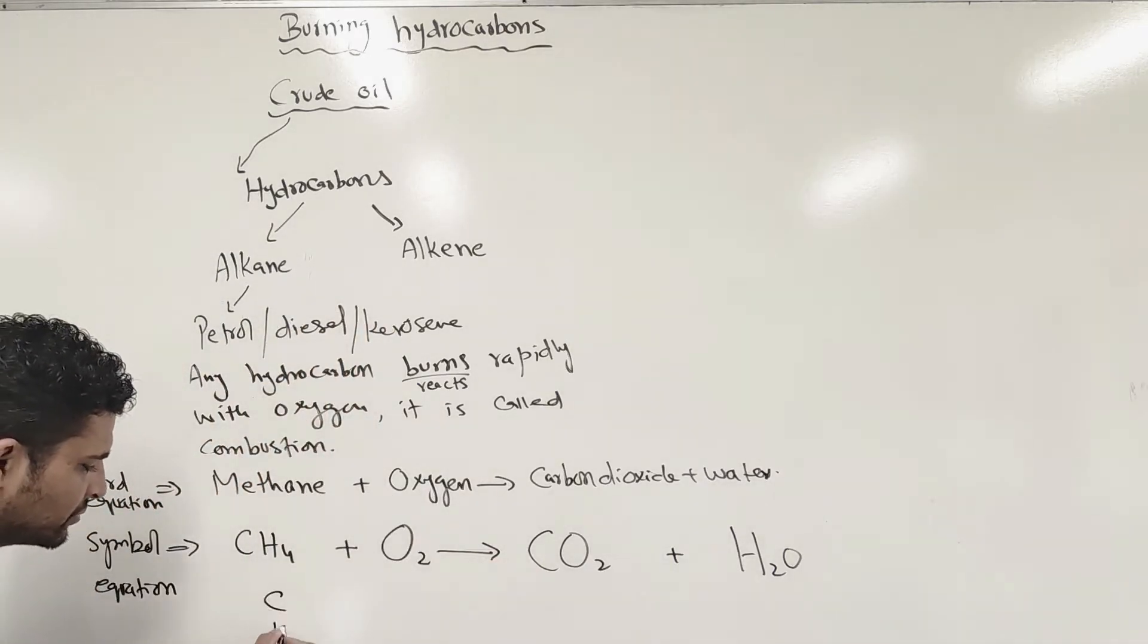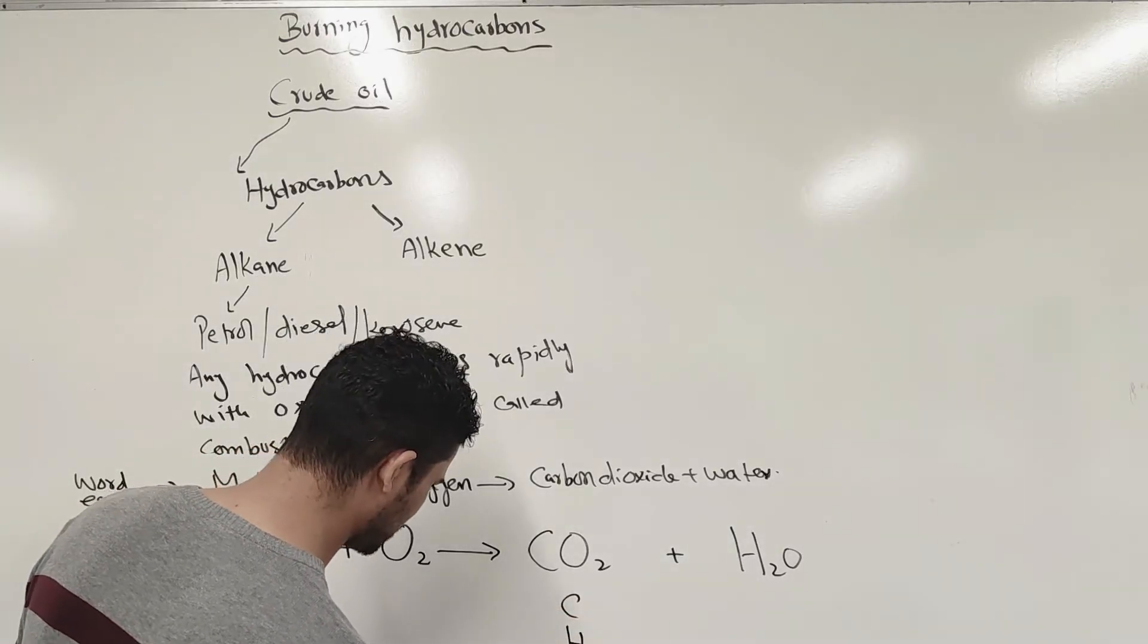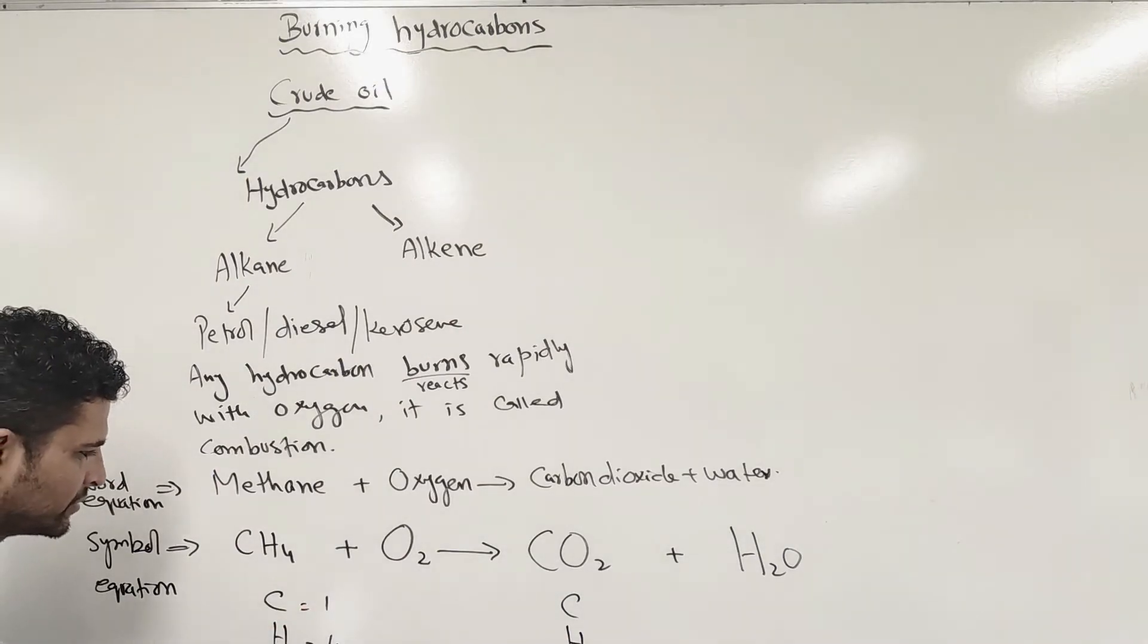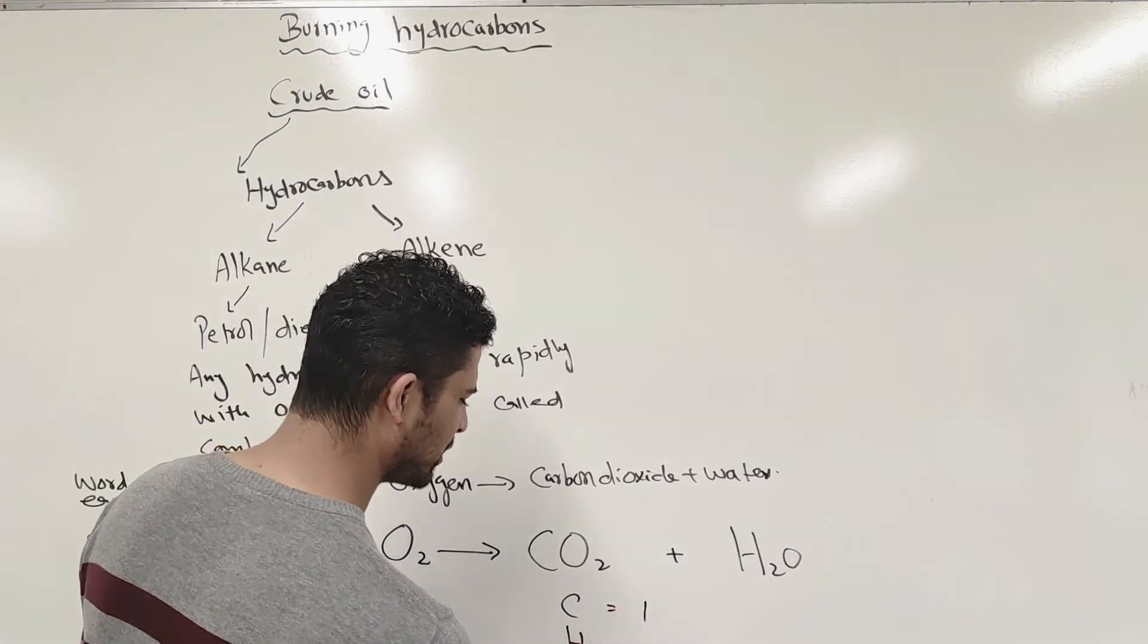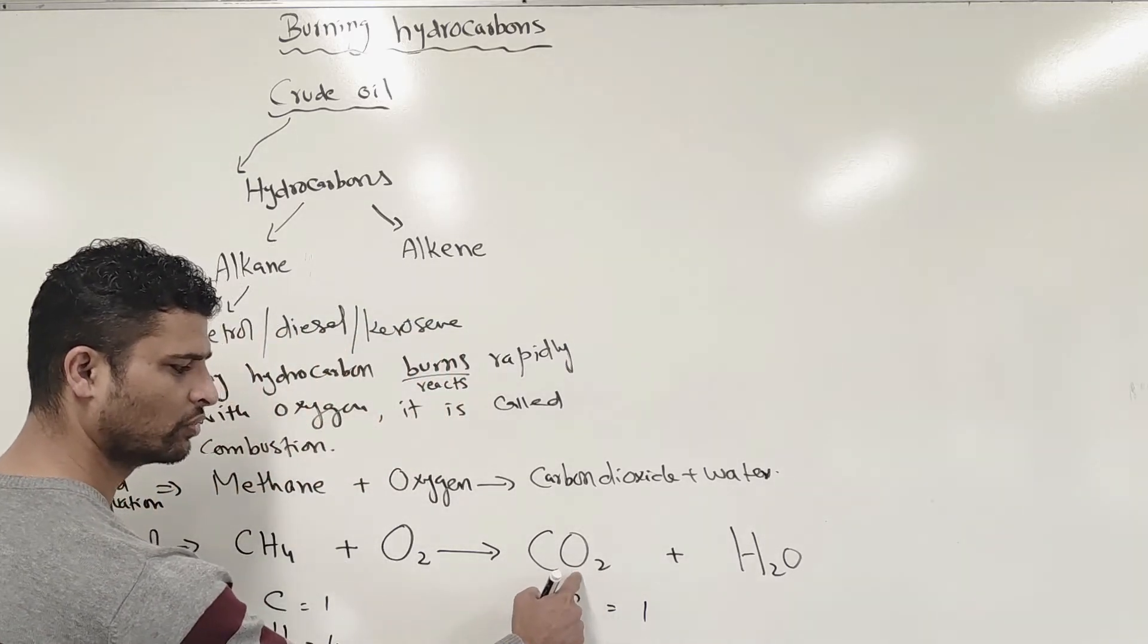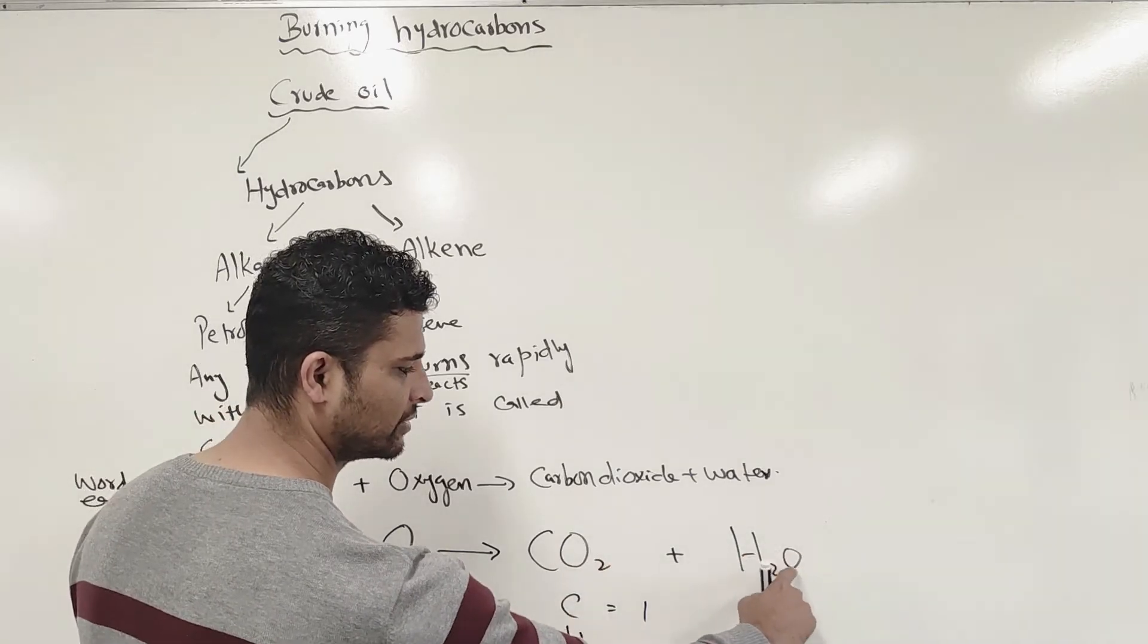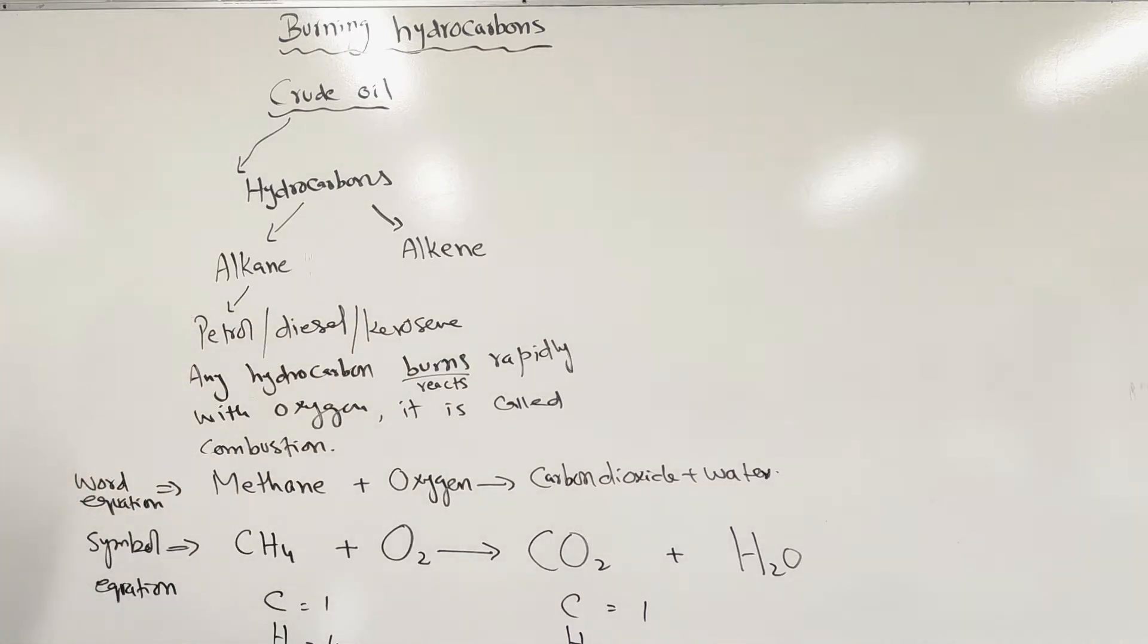This is how we do that. You write down the types of atoms which remain the same on both sides. At the moment, you have one carbon atom, four hydrogens and two oxygens. Here you have one carbon and two hydrogens, then three oxygens. This two only belongs to this oxygen - that's two oxygen. This oxygen is one, so one oxygen makes three oxygen total.